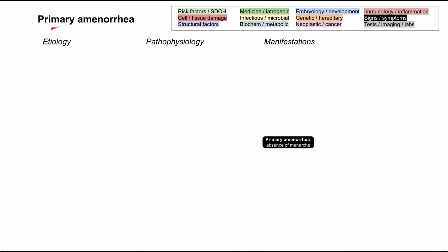Let's start with the definition of primary amenorrhea. Amenorrhea is absence of a period — it's when a woman of reproductive age does not have her monthly period, and it's called primary amenorrhea when she's never had a normal period before. It usually happens around onset of puberty where the girl doesn't have menarche — the start of having your normal monthly period.